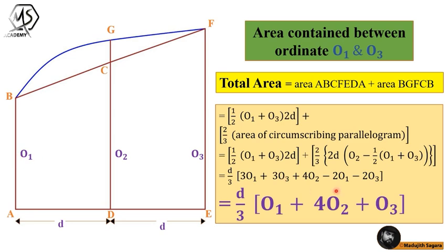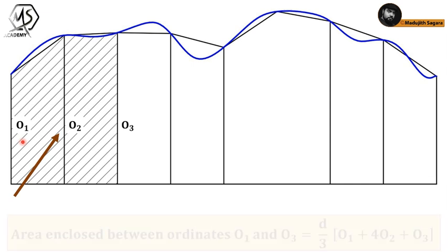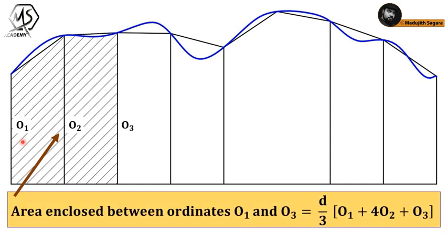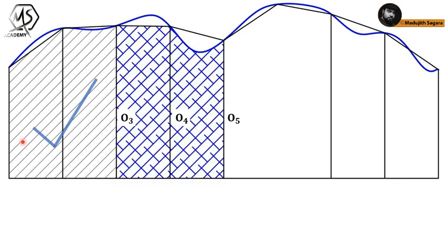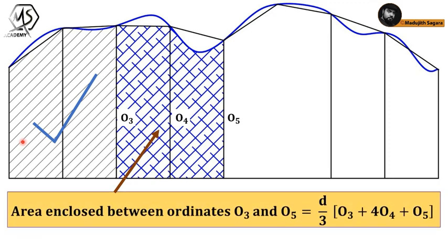Here, o1 is the first ordinate, o2 is the second ordinate, and o3 is the final ordinate, while d is the distance between two ordinates. I am going to use this equation to derive a common equation suitable for any area with an even number of strips. First of all I calculate the area between ordinate o1 and ordinate o3: that is d/3 into (o1 + 4o2 + o3). Then I calculate the area enclosed between ordinates o3 and o5: that is d/3 into (o3 + 4o4 + o5).